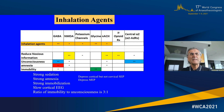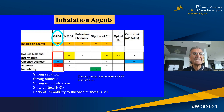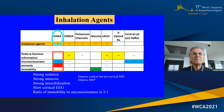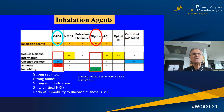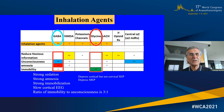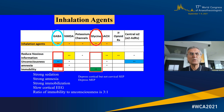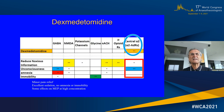Inhalation agents work on GABA receptors similarly to propofol, providing unconsciousness and amnesia, but not much analgesia. They also work on glycine receptors, which can provide very strong immobility. That's why using small doses of inhalation agents — activating glycine receptors — can create immobility without much effect on cortical and motor evoked potentials, as long as we use small doses.